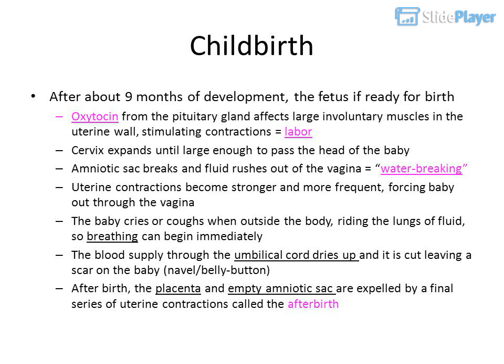The baby cries or coughs when outside the body, clearing the lungs of fluid so breathing can begin immediately. The blood supply through the umbilical cord dries up and is cut, leaving a scar on the baby's navel or belly button. After birth, the placenta and empty amniotic sac are expelled by a final series of uterine contractions called the afterbirth.